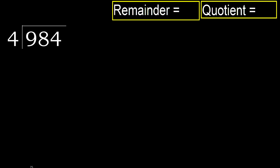984 divided by 4. 9 is not less, therefore we start with 9. 4 multiplied by which number is nearest to 9, but not greater?